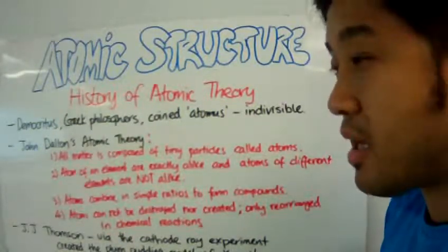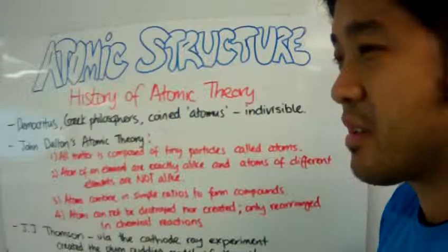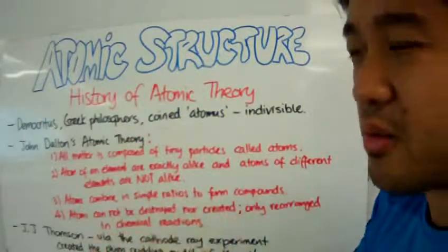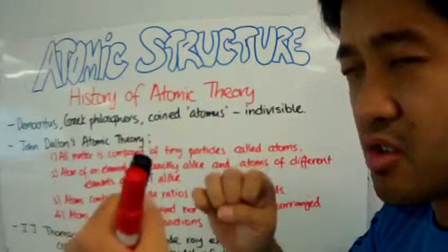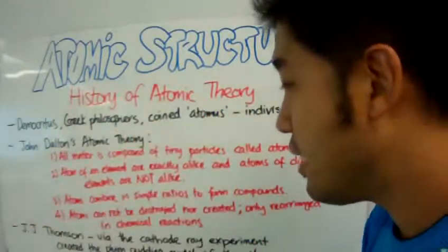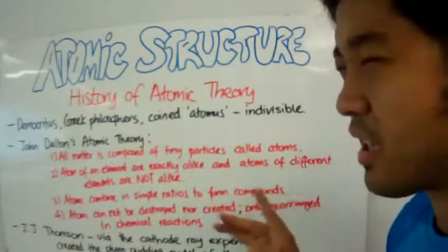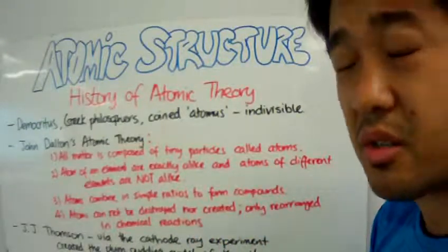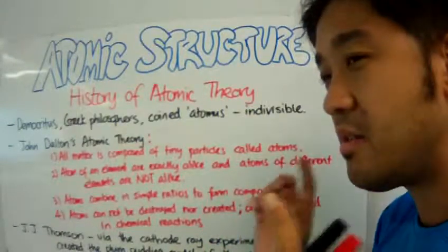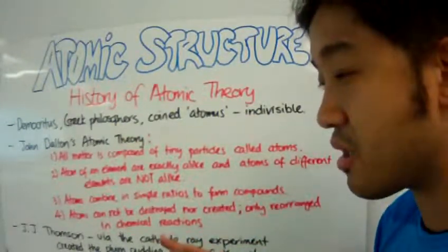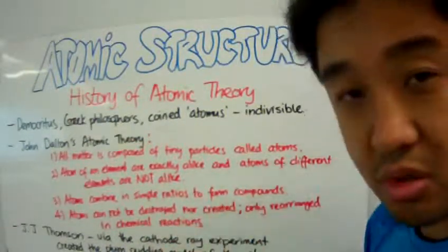Like water is made of one oxygen atom and two hydrogen atoms combined. Also, atoms cannot be destroyed nor created. They can only be arranged in chemical reactions. This is quite profound. That means he set the tone that everything that we know comes in very predictable fixed ratios.